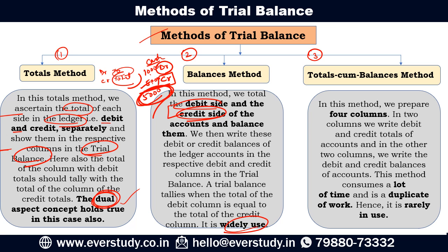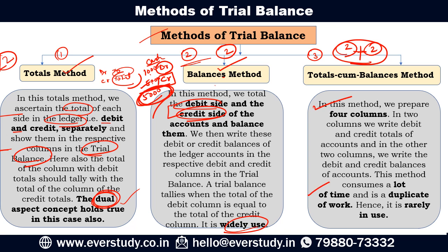If we talk about the total-cum-balance method, in this method we have four columns. Why? Because this is a blended version — combining both the total method and the balance method. So the total method has two columns, the balance method has two columns, and since the total-cum-balance method blends both, four columns are prepared in total. This is a time-consuming activity, and there are many chances of duplication of work, which is why it is very rarely used.